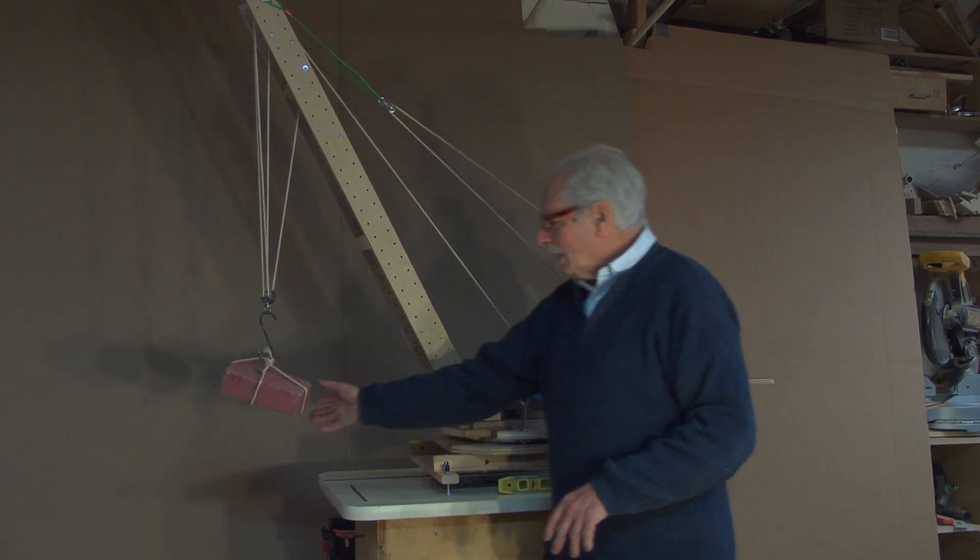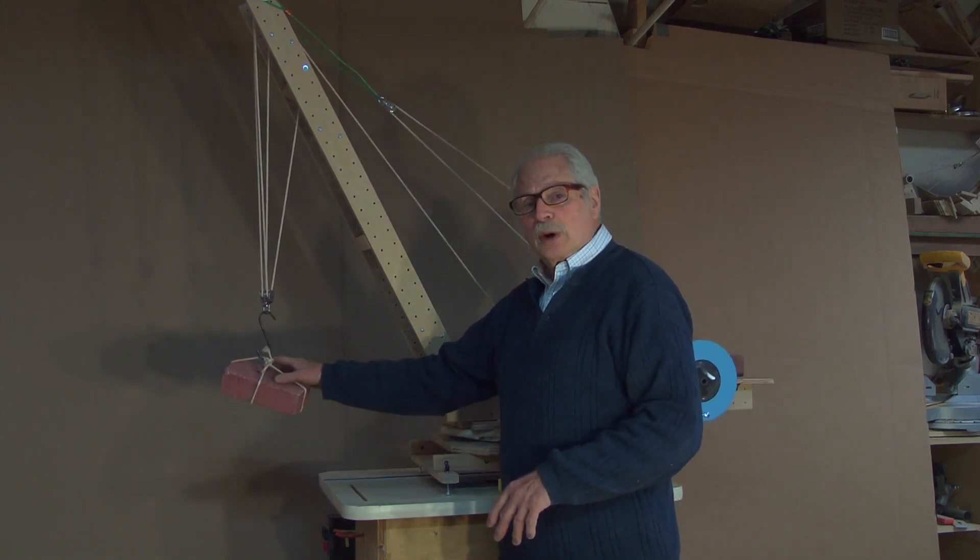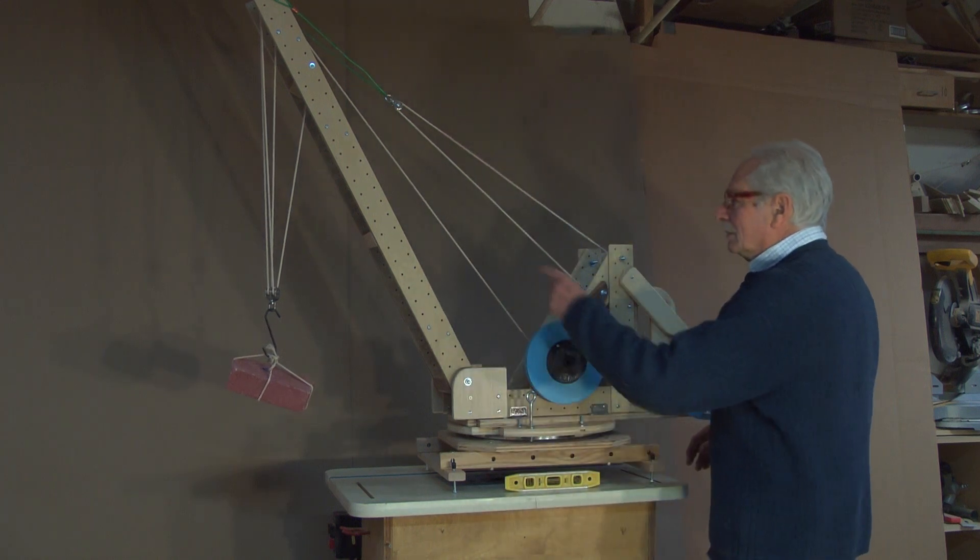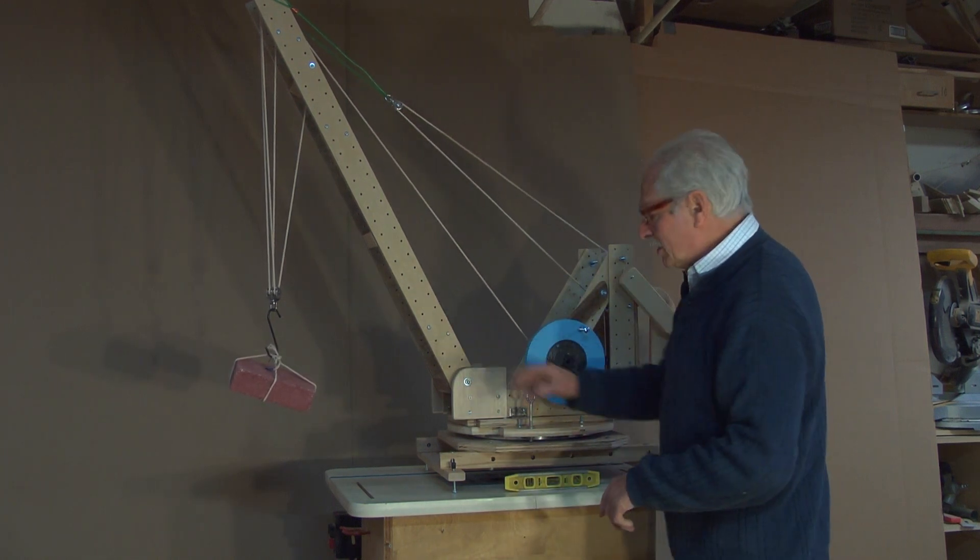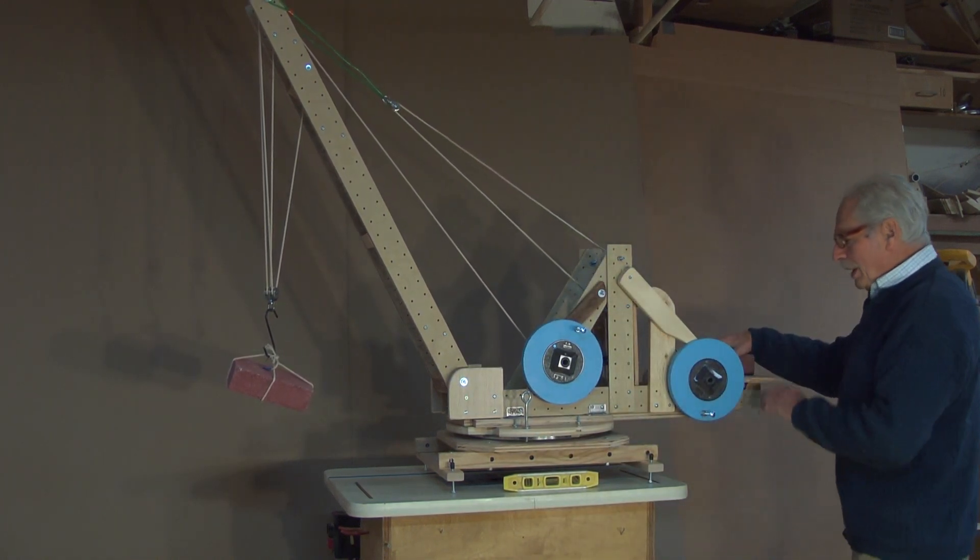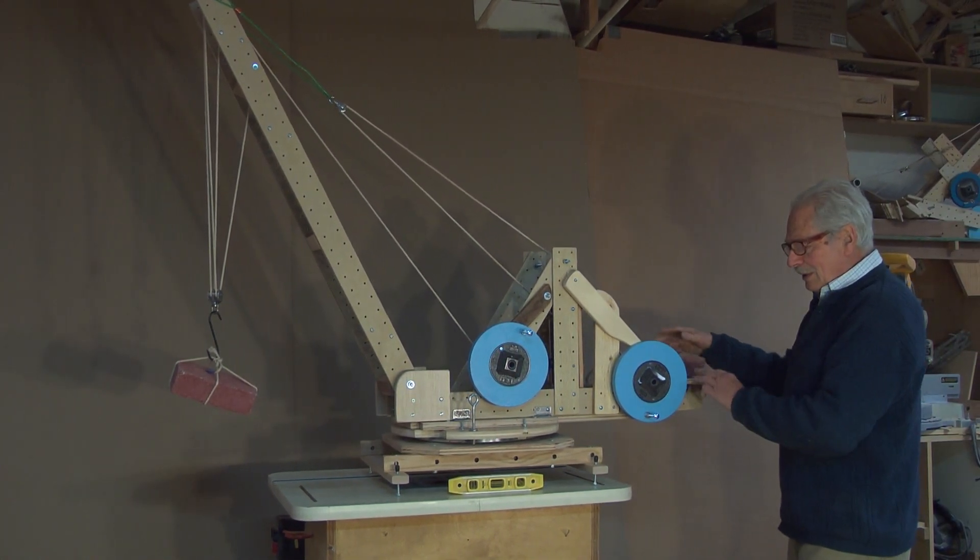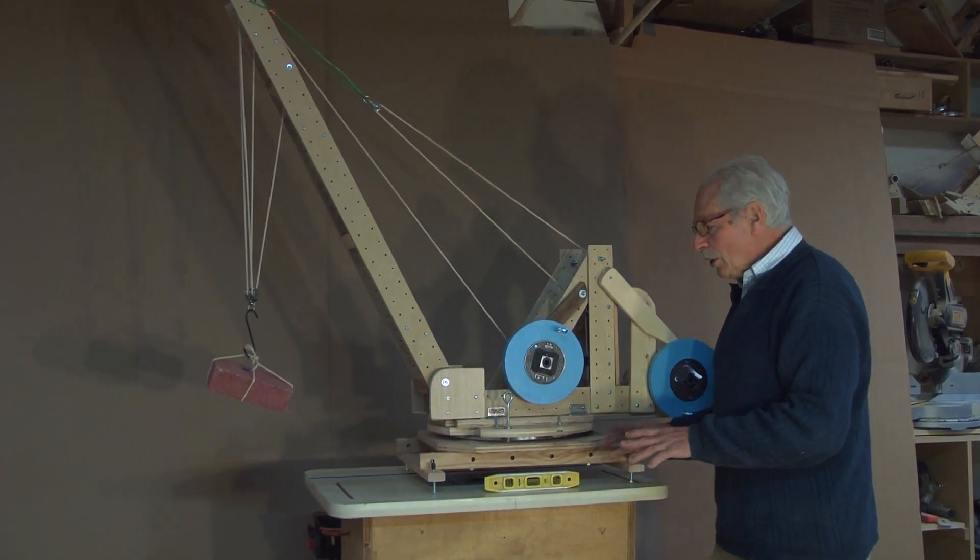Let's say you have a two brick load and the boom is at 60 degrees and you have one brick for counterweight. Everything's good.